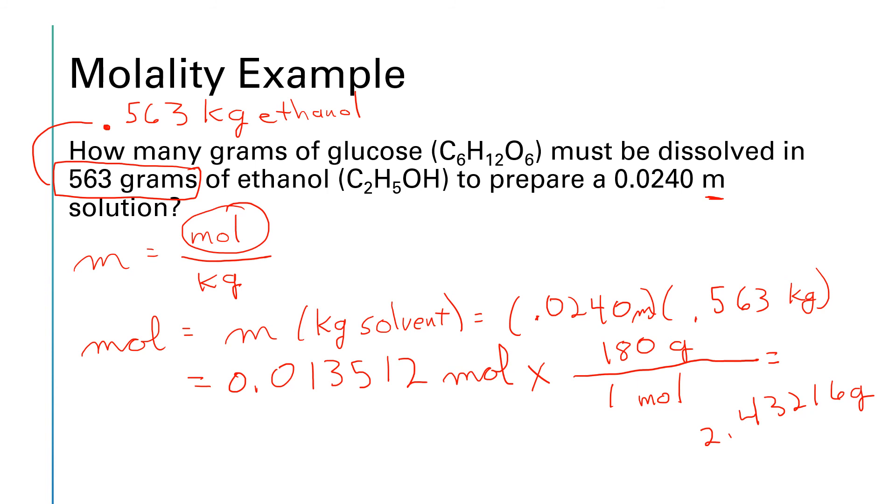And that gives us a final answer of 2.43216 grams. The numbers in our problem all have three sig figs, so I want to round this to three sig figs, which would be the second decimal place. The next digit's a 2, which says round down. So our final answer will be 2.43 grams of glucose.